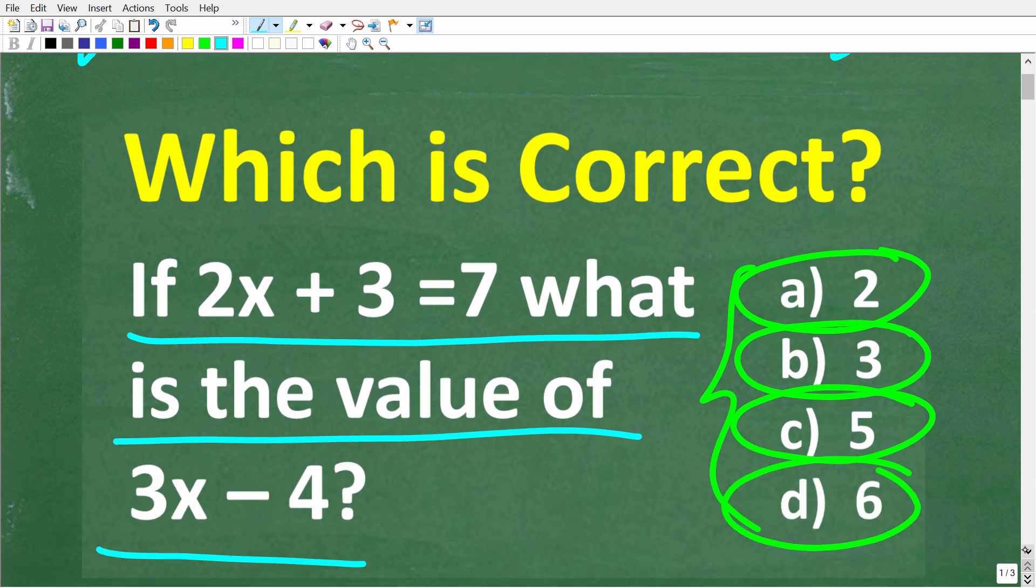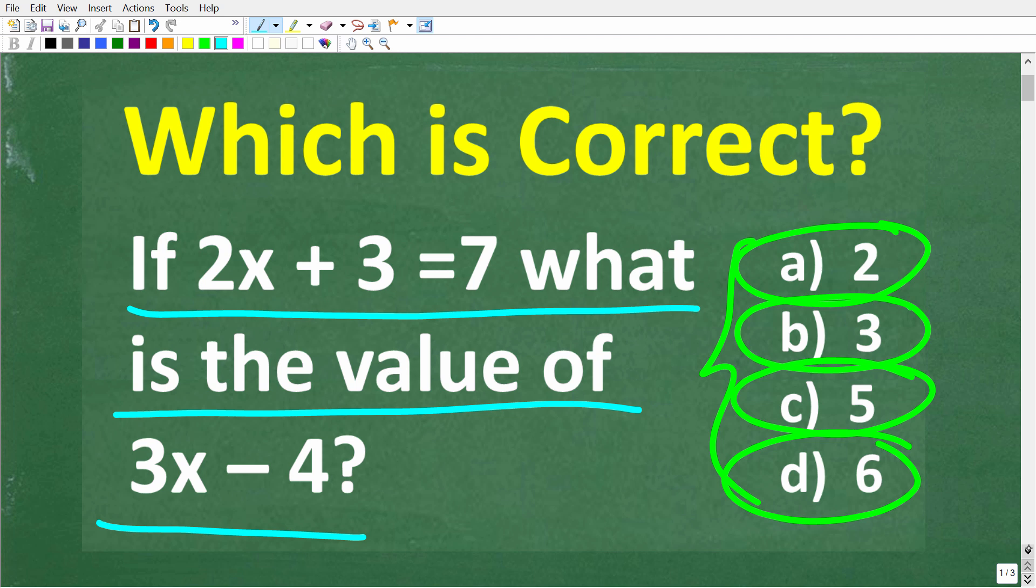All right, so one more time, here is the problem. So if 2x plus 3 is equal to 7, what is the value of 3x minus 4? So let's see the solution steps to this problem now.